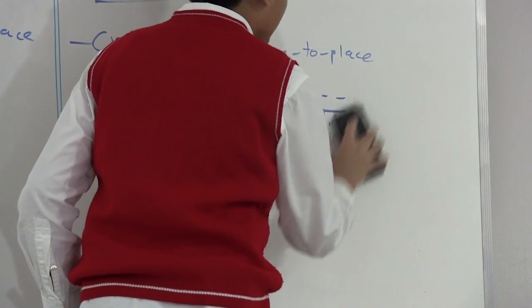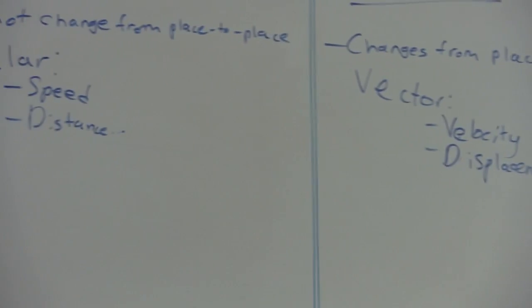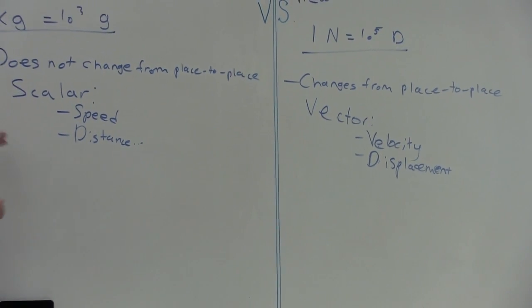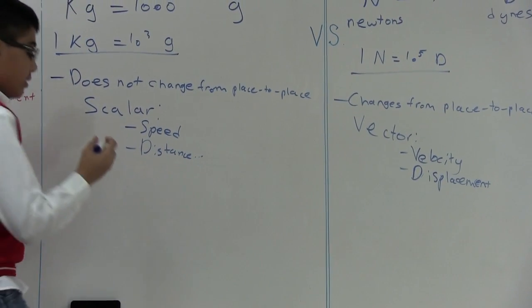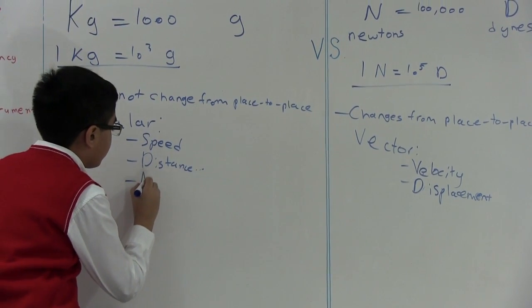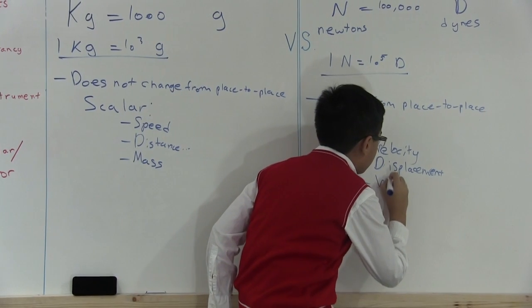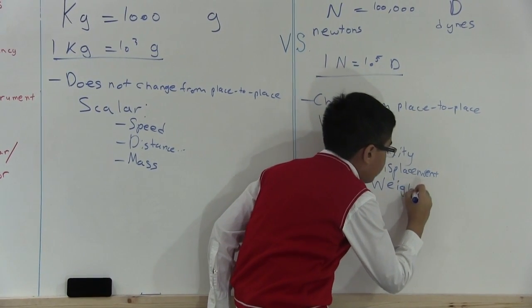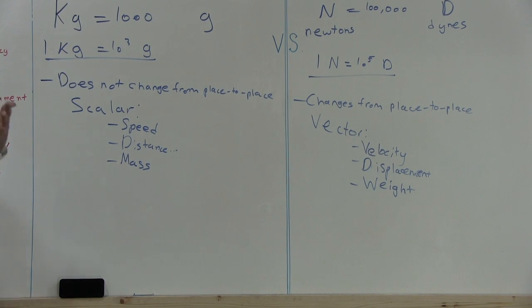Now you might be asking, how does this actually help us with mass and weight? Well, of course, speed, distance, velocity, displacement doesn't really help us with mass and weight. But there is one thing that does. The fact that mass is a scalar and weight is a vector.